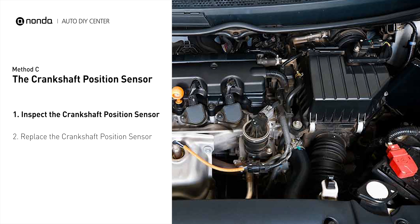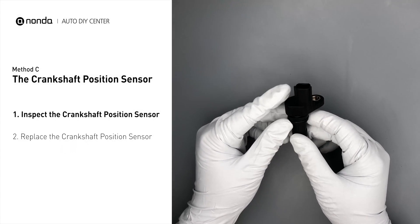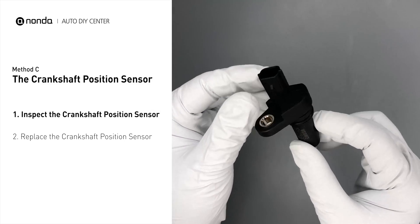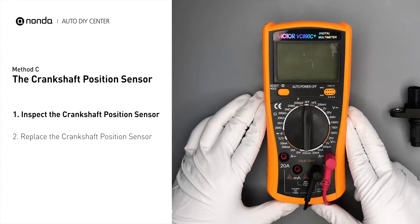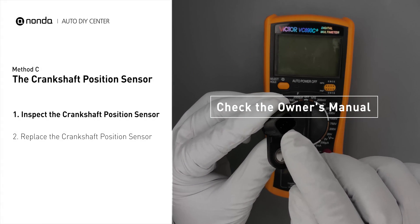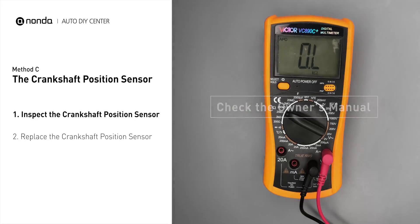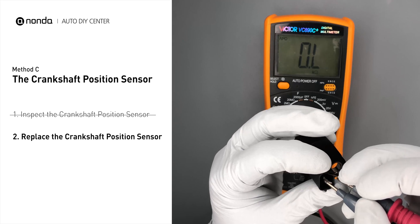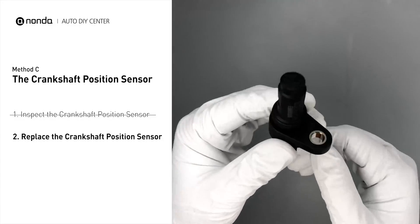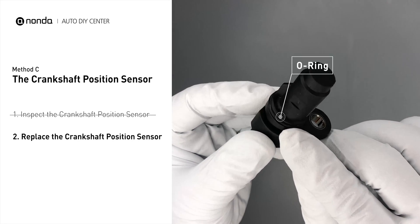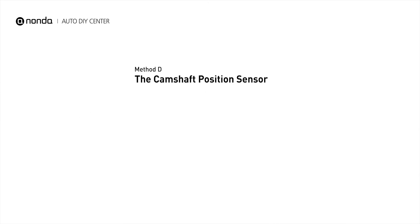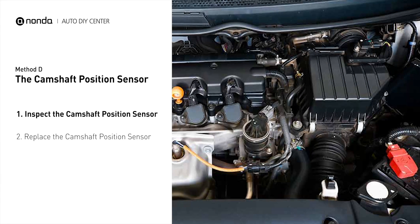Method C: The Camshaft Position Sensor. The camshaft position sensor is located in the valve cover near the top of the engine, or at the front or rear of the cylinder head. Carefully remove the sensor from the vehicle and visually inspect it to make sure it hasn't been contaminated by a leak. Use a multimeter to test the sensor — check your owner's manual for the specific resistance range for your vehicle. If you do not get a reading, the sensor is faulty and needs to be replaced. Also check that the O-ring from the sensor hasn't fallen into its hole before installing the new sensor.